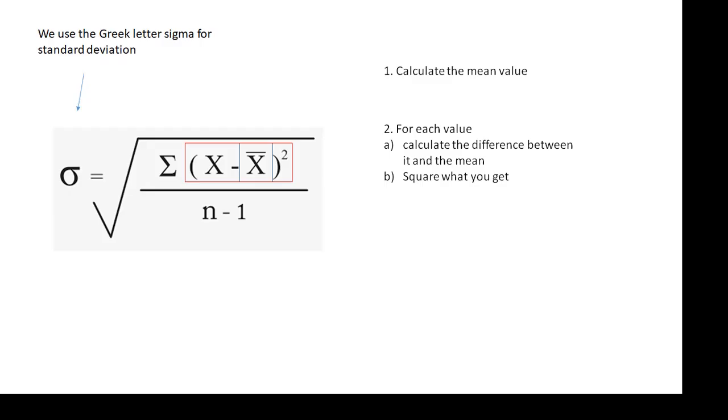By squaring it, that means if it's positive or negative it doesn't matter. Because if you square a negative number it turns out positive. So for each value calculate the difference between it and the mean. And then square it. And then divide it by, well add them all up. That's the sigma. That's this thing here. Sigma. That means add them all up. The sum of. Add them all up.